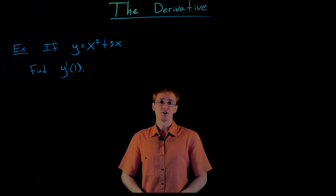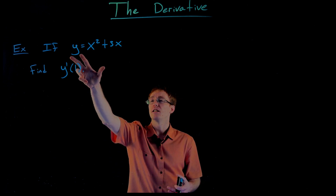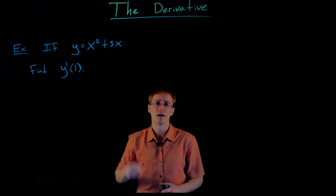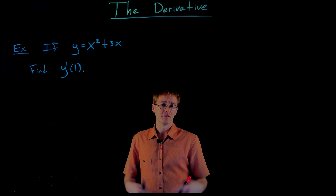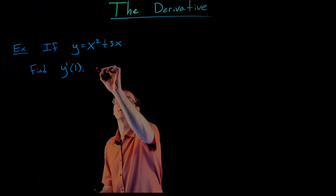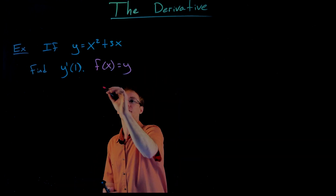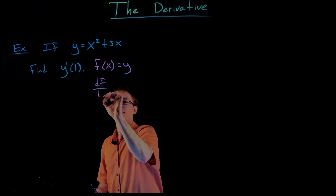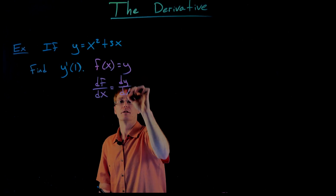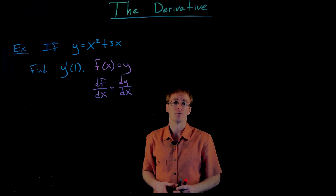In our limit definition of the derivative, our function was named f and written as f of x. Here our function is called y instead, so instead of looking at f prime, we're going to be looking at y prime. So instead of calling our derivative df/dx, we can think of y as f of x and call this dy/dx instead. So if y equals f of x, then df/dx — the derivative of our function with respect to x — is the same as the derivative of y with respect to x. Then we evaluate that at x equals 1.